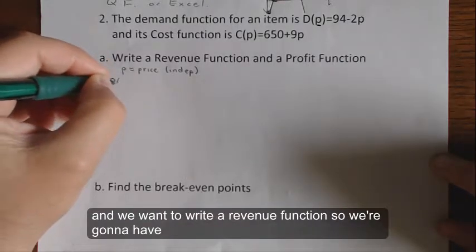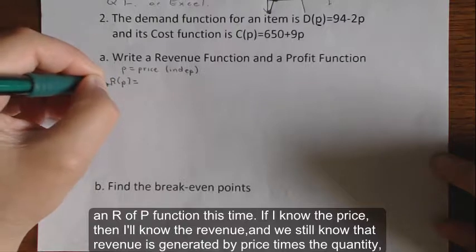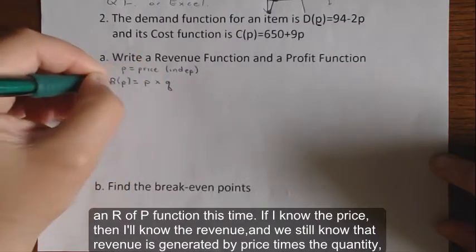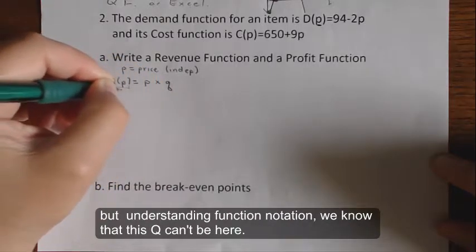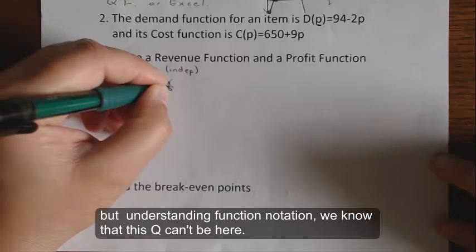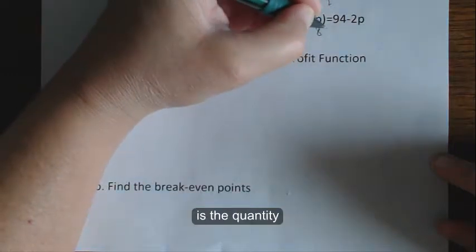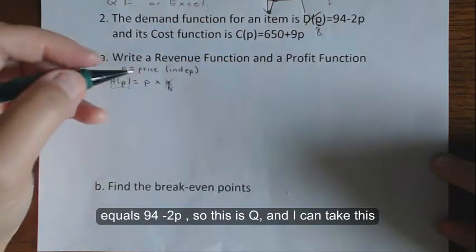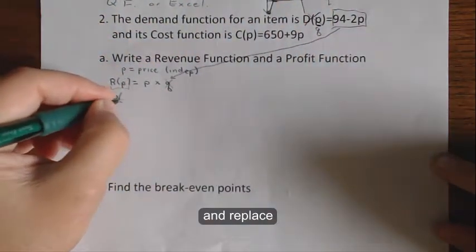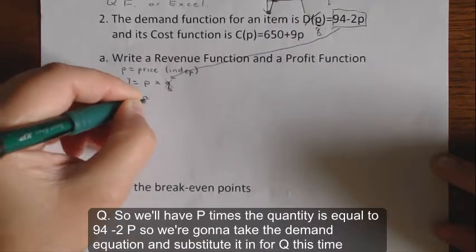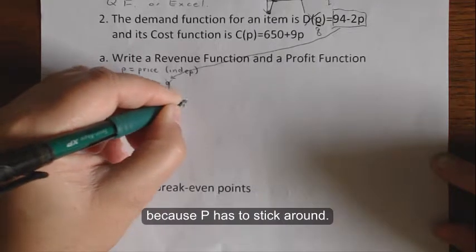We want to write a revenue function, so we're going to have an R(p) function this time. If I know the price, then I'll know the revenue. We still know that revenue is generated by price times quantity, but understanding function notation, we know that q can't be here. So we have to go to this demand function. D(p), remember, is the quantity = 94 - 2p, so this is q, and I can take this and replace q. So we'll have p times the quantity = 94 - 2p.